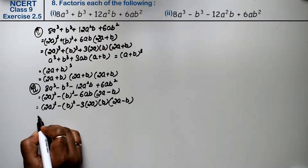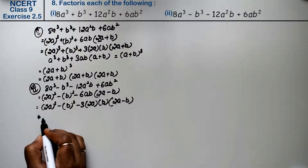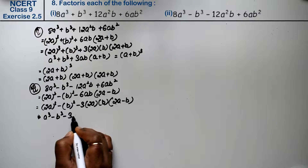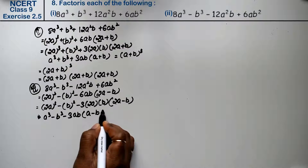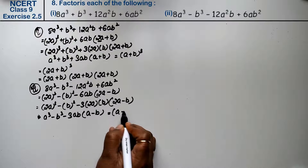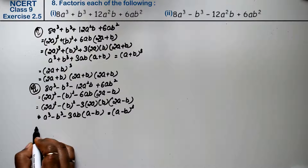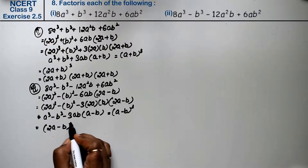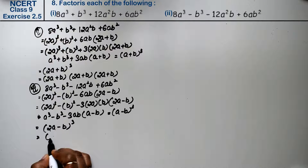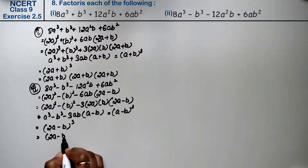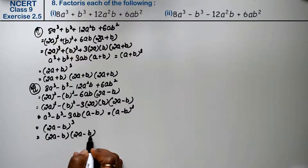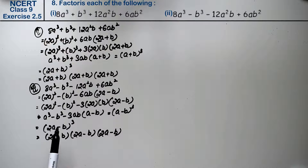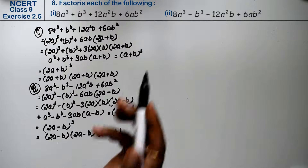So this becomes: (2a) whole cube minus (b) whole cube minus 3 into 2a into b into (2a minus b). Now see, which formula is this? a cube minus b cube minus 3ab into (a minus b) — this is the formula for (a minus b) whole cube. So a is 2a and b is b. So we can write: (2a minus b) whole cube, and (2a minus b) is the answer.